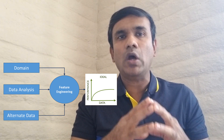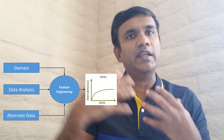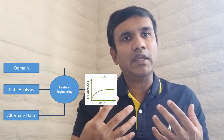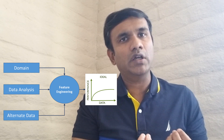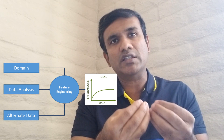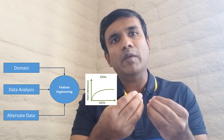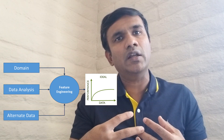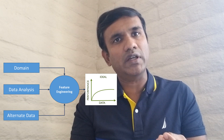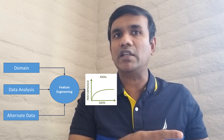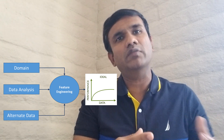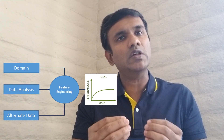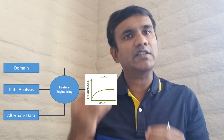Sometimes features can also come from an external data provider. For example, if you are trying to measure whether a particular customer will default, you have the customer information and you want to use some external third-party provider who can give you more information about the customer — like the customer's external delinquency rate, or whether the customer has filed for bankruptcy. So features can also come from an external data provider.